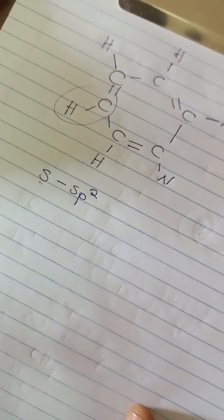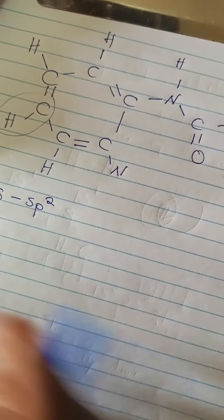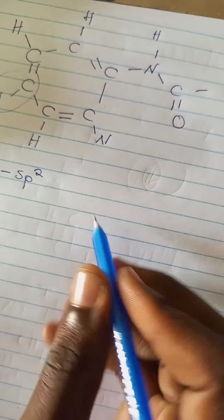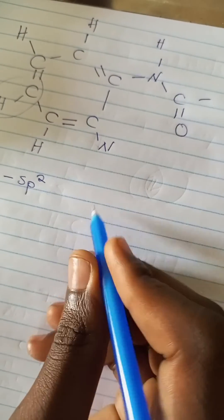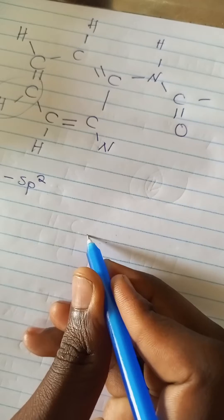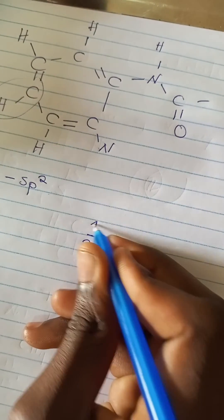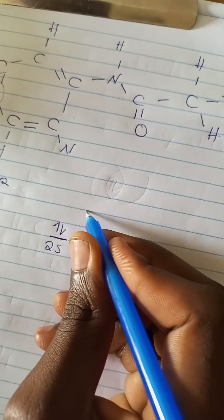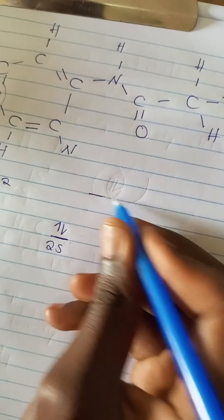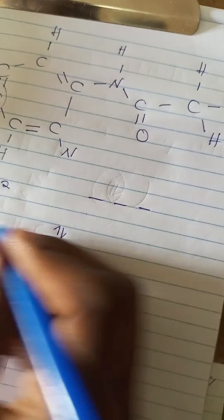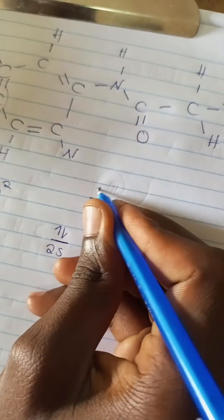Since you know that in the ultimate shell you have the 2s orbital with two electrons there, then you have three p orbitals as well. Okay, and how many electrons are there? There are just two.